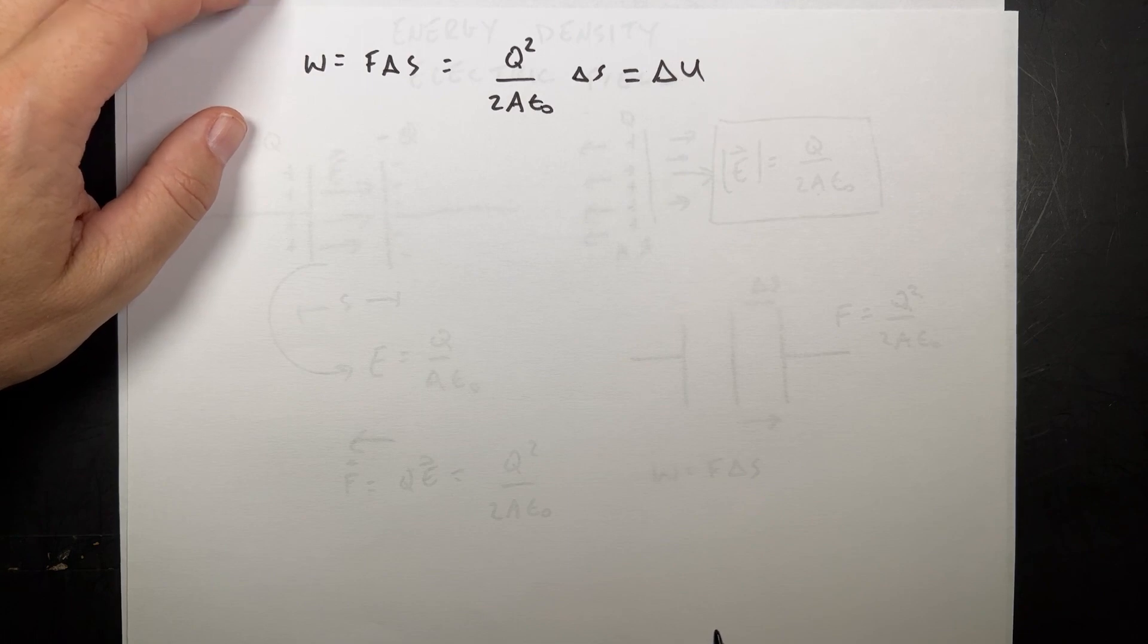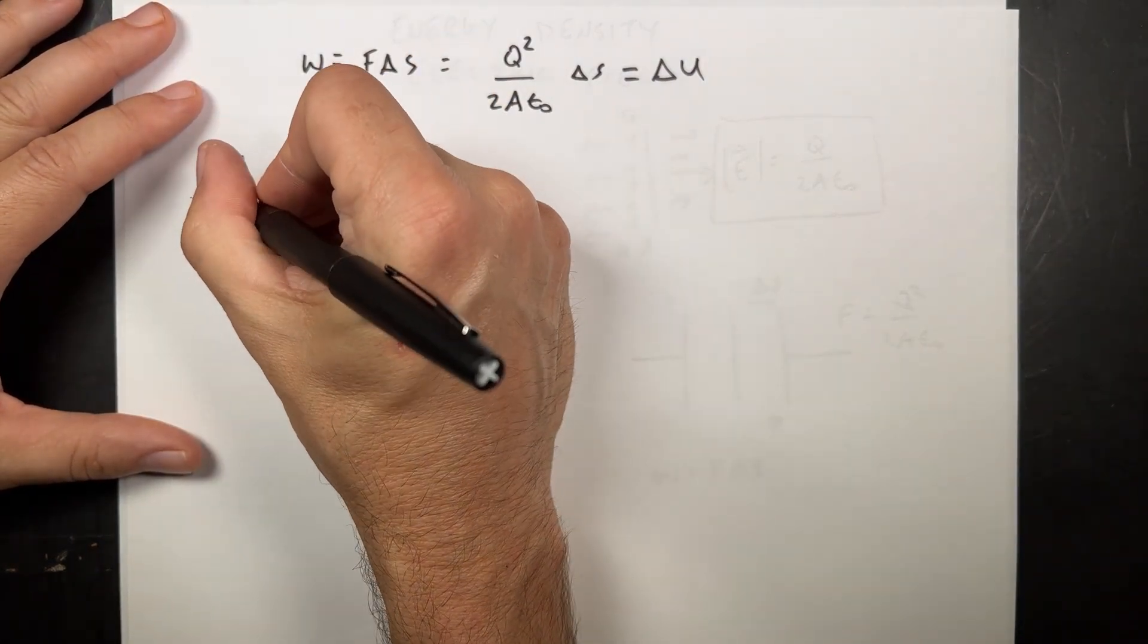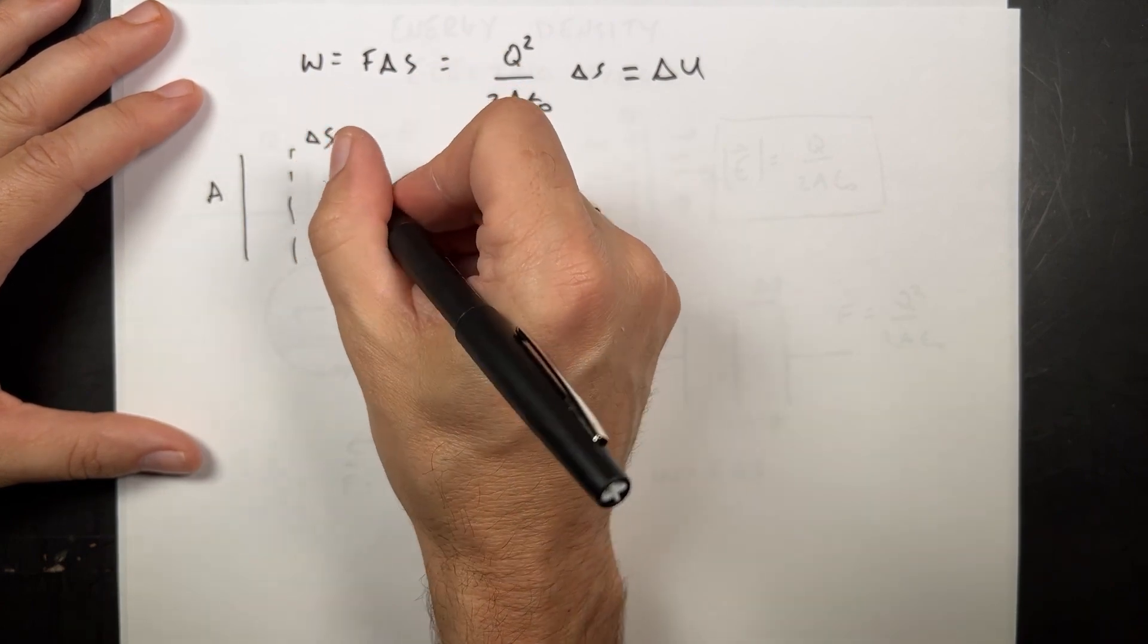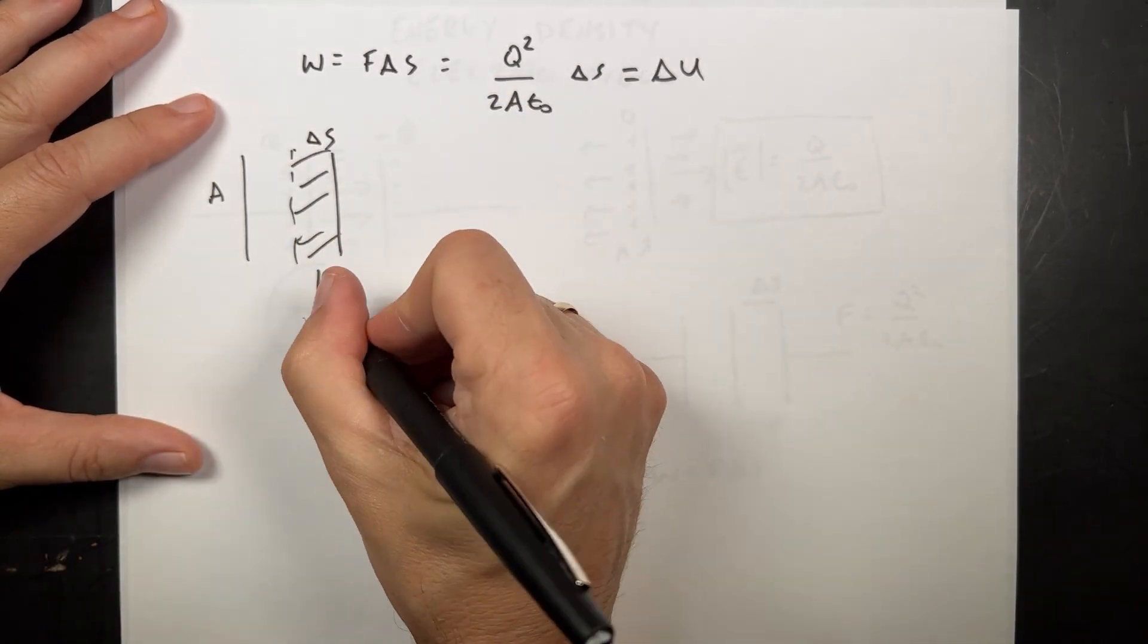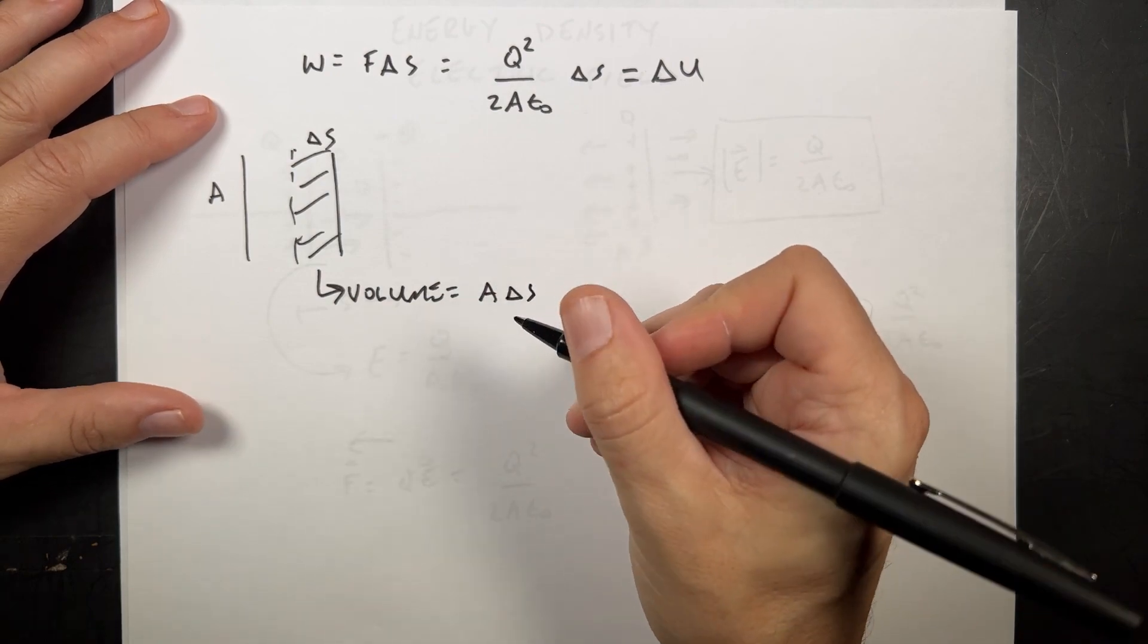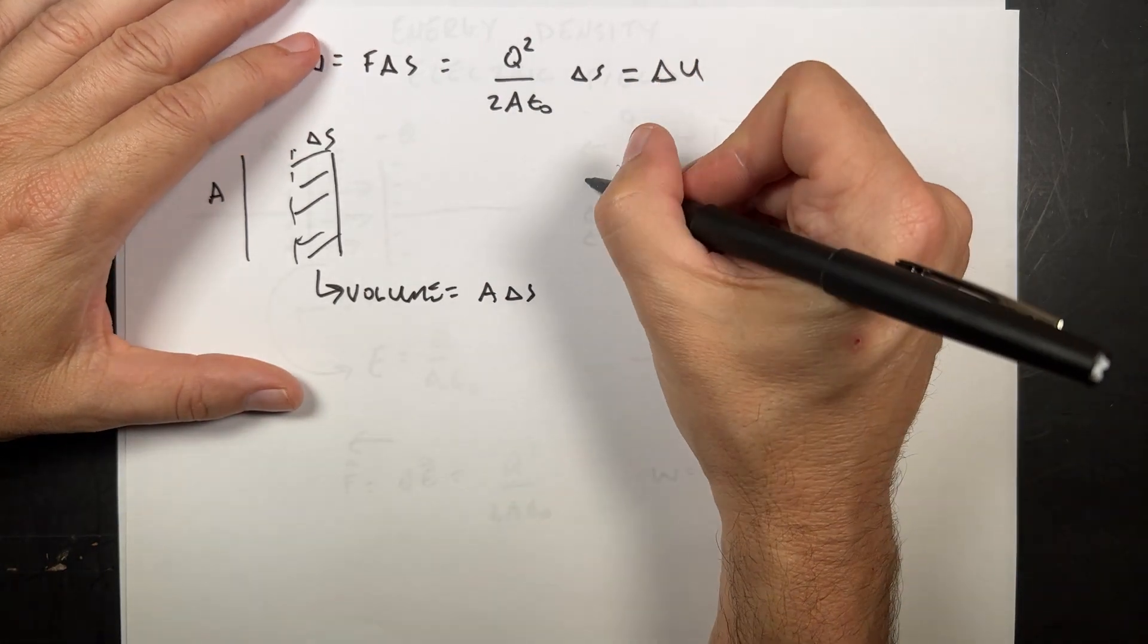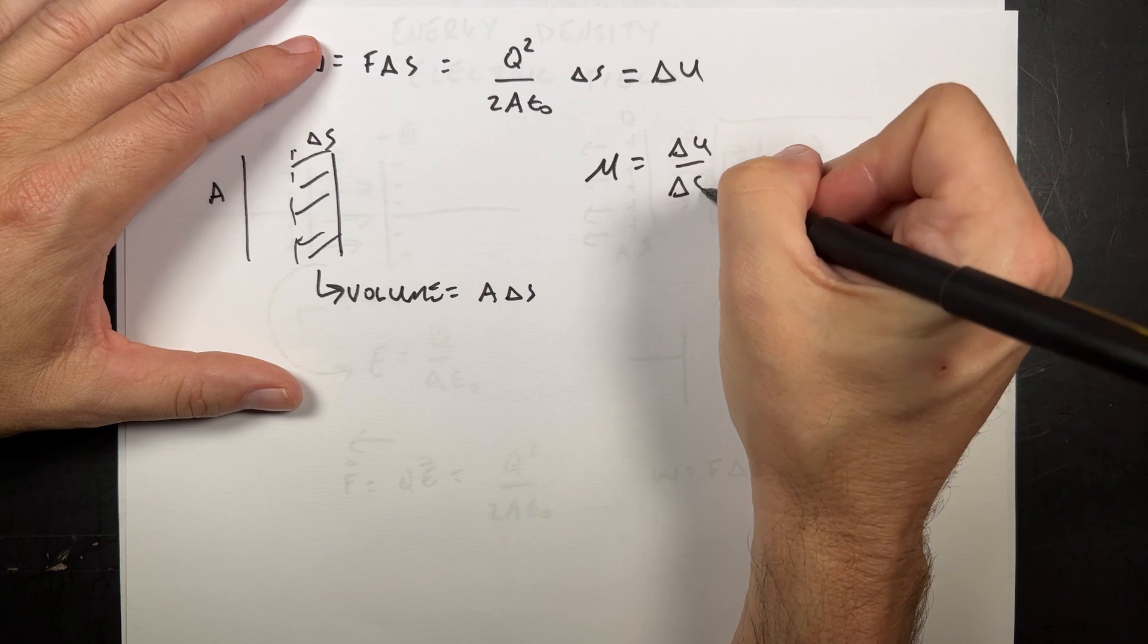So how much electric potential energy is stored in the volume, right? Because the volume also changed. So here I have an area A, and I'm pulling at a distance delta S right here. So this volume is going to be equal to A delta S. So let's calculate the change in potential energy per change in volume. And we'll call that the energy density, mu equals delta U over delta V.